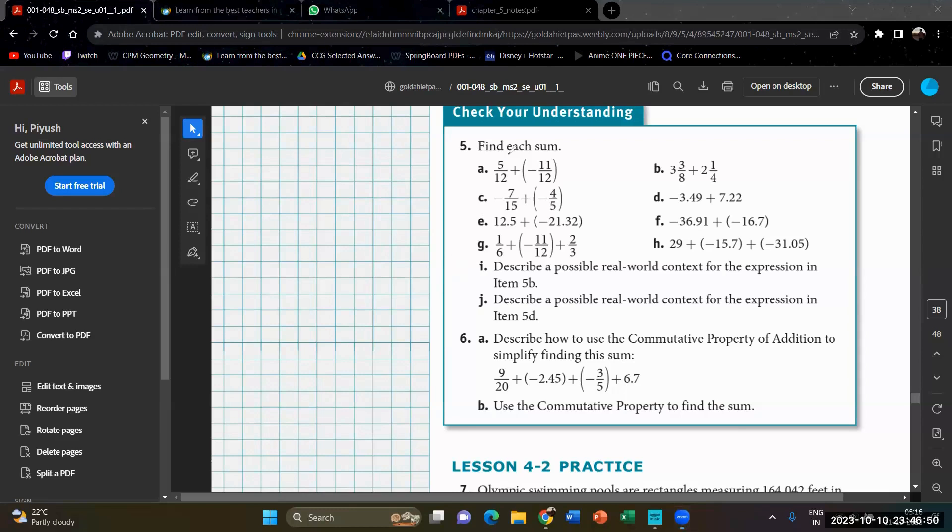For example, let's do problem 8. Now you have 5 over 12 plus negative 11 over 12. Now tell me, are the denominators same or different? They're the same. So do we need multipliers here? No. So what can we write now? All you have to do now is 5 plus negative 11. The denominator is the same. So it's 5 minus 11 by 12. Do you agree?